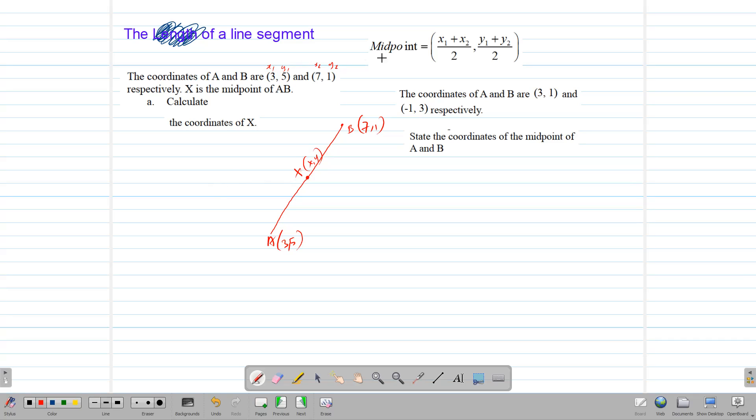So once we label our points, we can easily fit them into the formula and find our results. The formula says x1 plus x2 over 2, comma, y1 plus y2 over 2. Putting that in English, we mean add the x numbers, which are 3 plus 7, divide by 2.